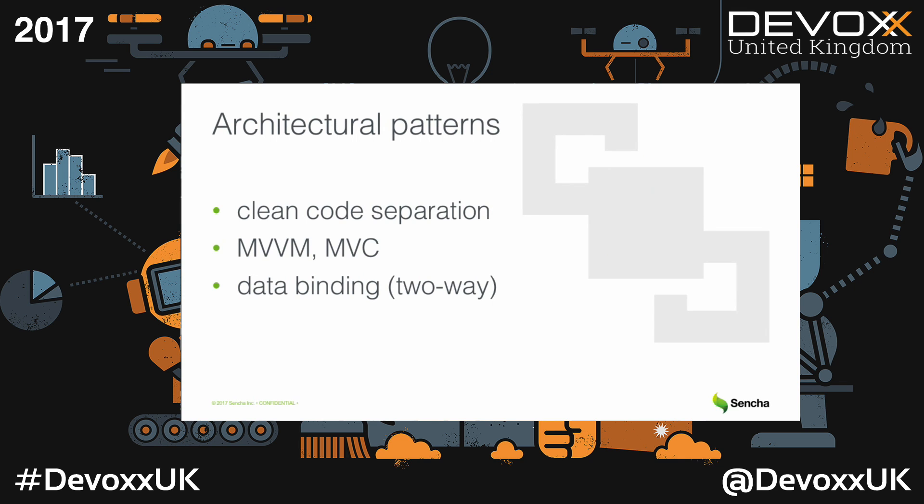For architectural patterns, Ext.js helps you organize clean code separation. You can use different patterns like Model-View-ViewModel or Model-View-Controller to separate your code, which can be extremely important for complex enterprise applications - not just simple calculators. You can also use data binding to simplify your application's source code. Two-way data binding with formulas is also supported.